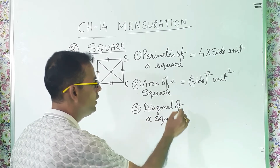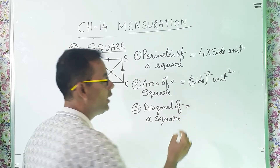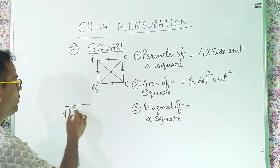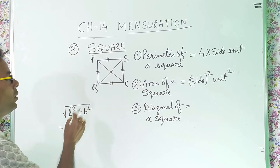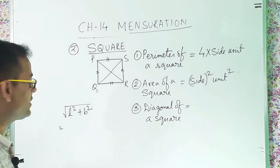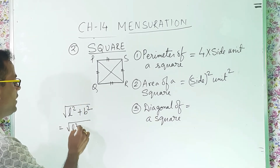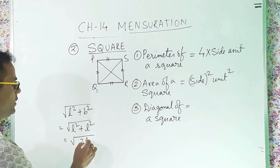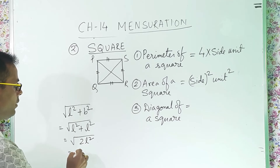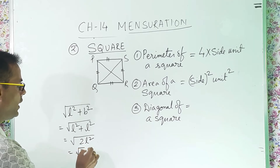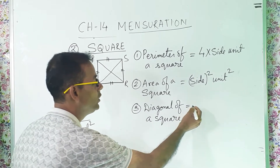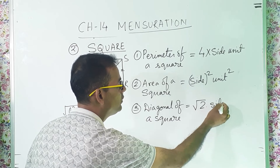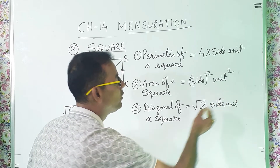Now what is the formula for the diagonal of a square? For a rectangle we used root over (length squared plus breadth squared). In a square, both length and breadth are the same, so we get root over (2 × length squared), which gives us root 2 into length. So the diagonal of a square is root 2 into side, in units.